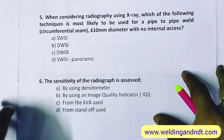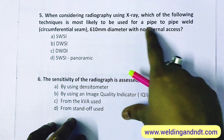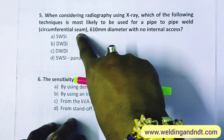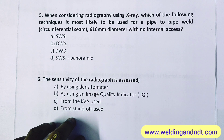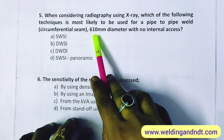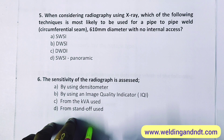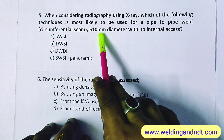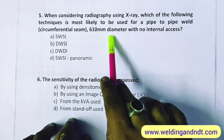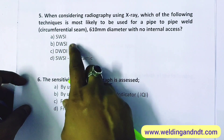Question 5: when considering radiography using X-ray, which technique is most likely used for a pipe-to-pipe circumferential weld of 610 mm diameter with no internal access? Since the diameter is 610 mm and there is no internal access, we use double-walled single image. Less than 100 mm uses double-walled double image; more than 100 mm uses double-walled single image. The answer is B.